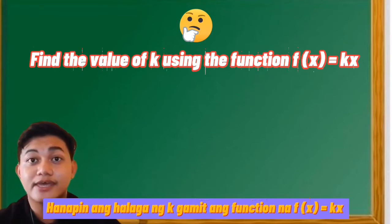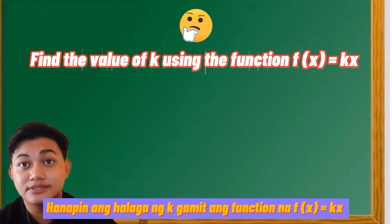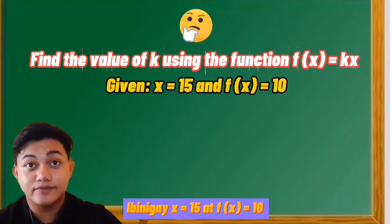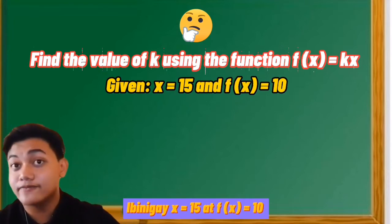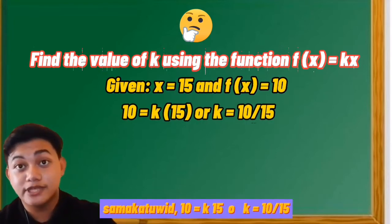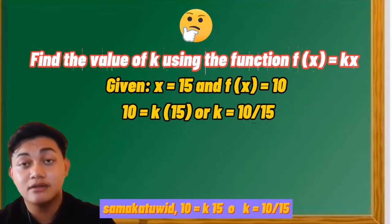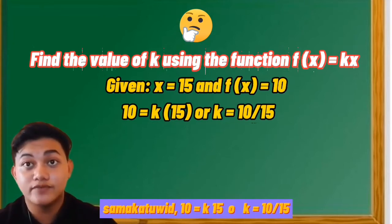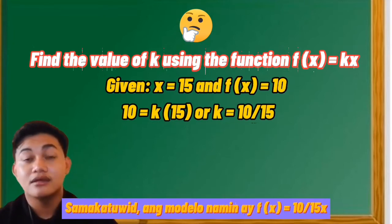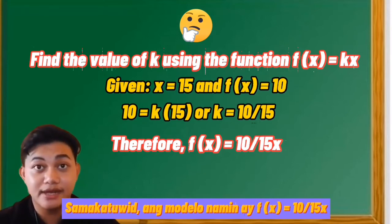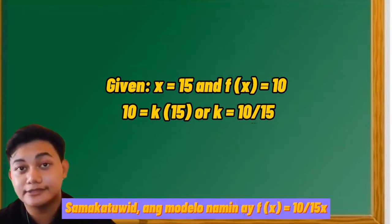Find the value of k using the function f(x) = kx. Given x = 15 and f(x) = 10, therefore 10 = k times 15, or k = 10/15. Therefore, our model is f(x) = (10/15)x.